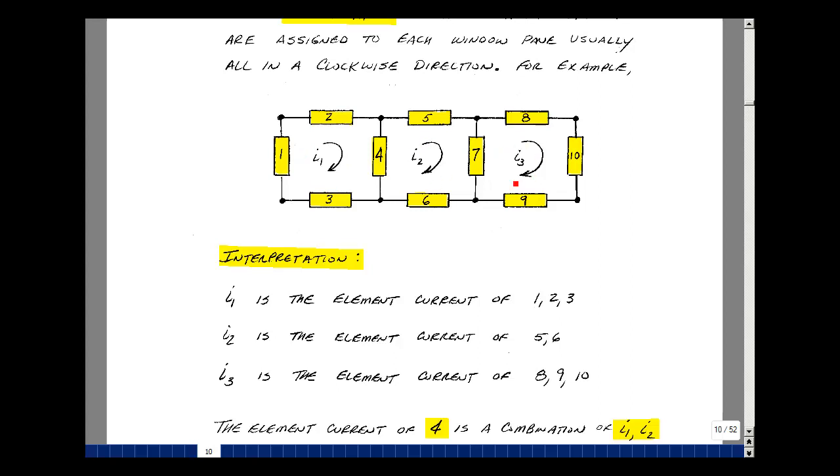They also look like the meshes in a volleyball net. Let me assign this mesh current and call it I1, I2, and I3. We'll do them all in a clockwise direction.